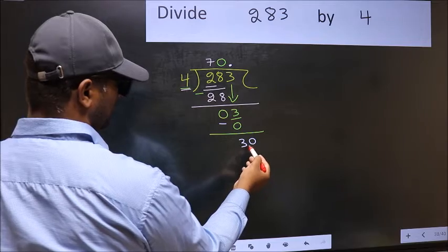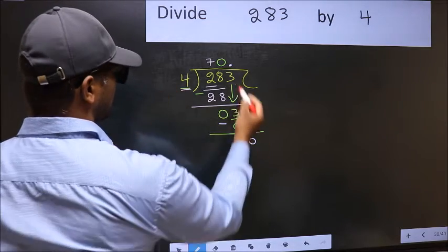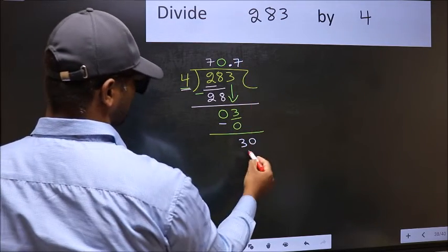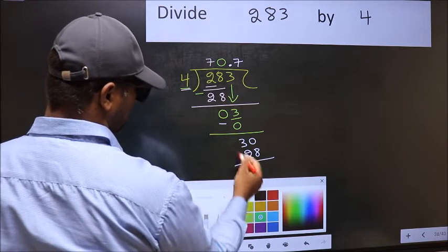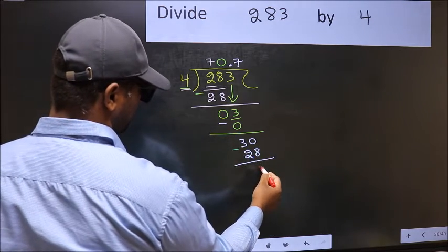So, 30. A number close to 30 in 4 table is 4 times 7, 28. Now, you subtract. 30 minus 28, 2.